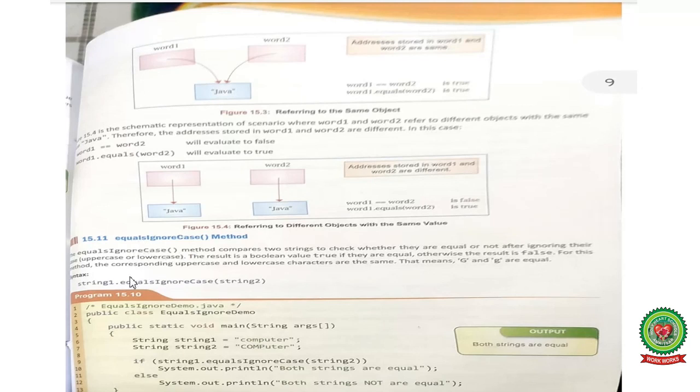Syntax of equals ignore case: string one dot equals ignore case. Students, do practice program 15.9 and 15.10. We will be continuing the chapter in the next session. Thank you.